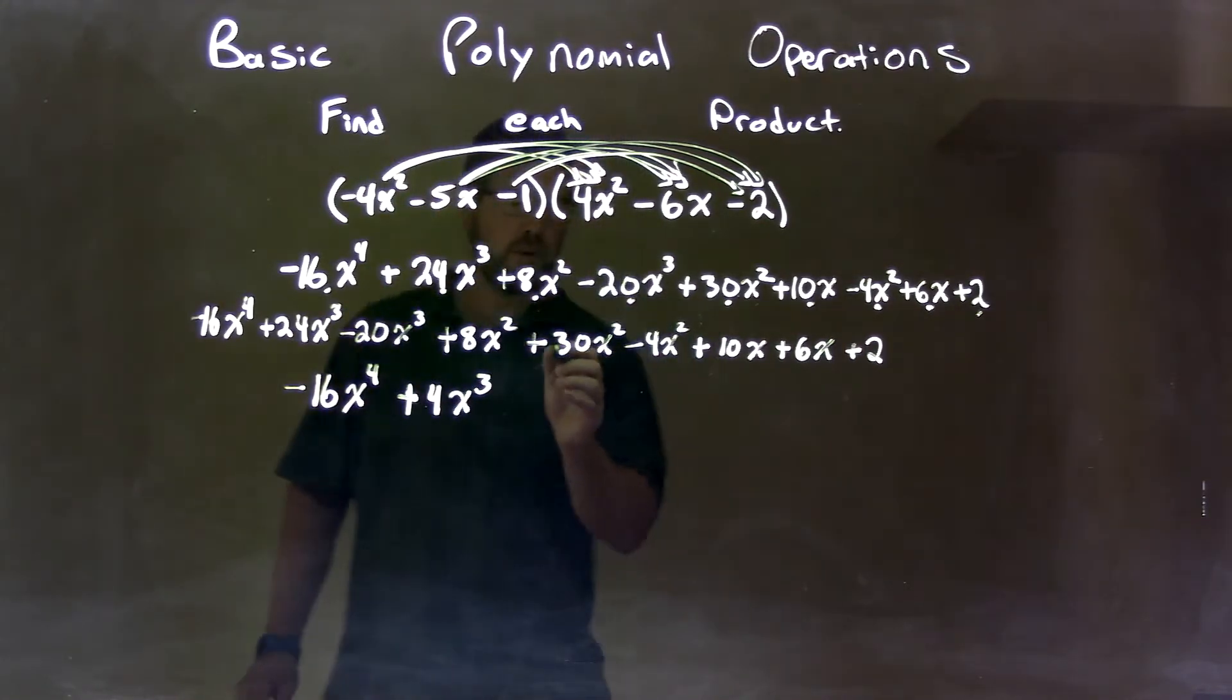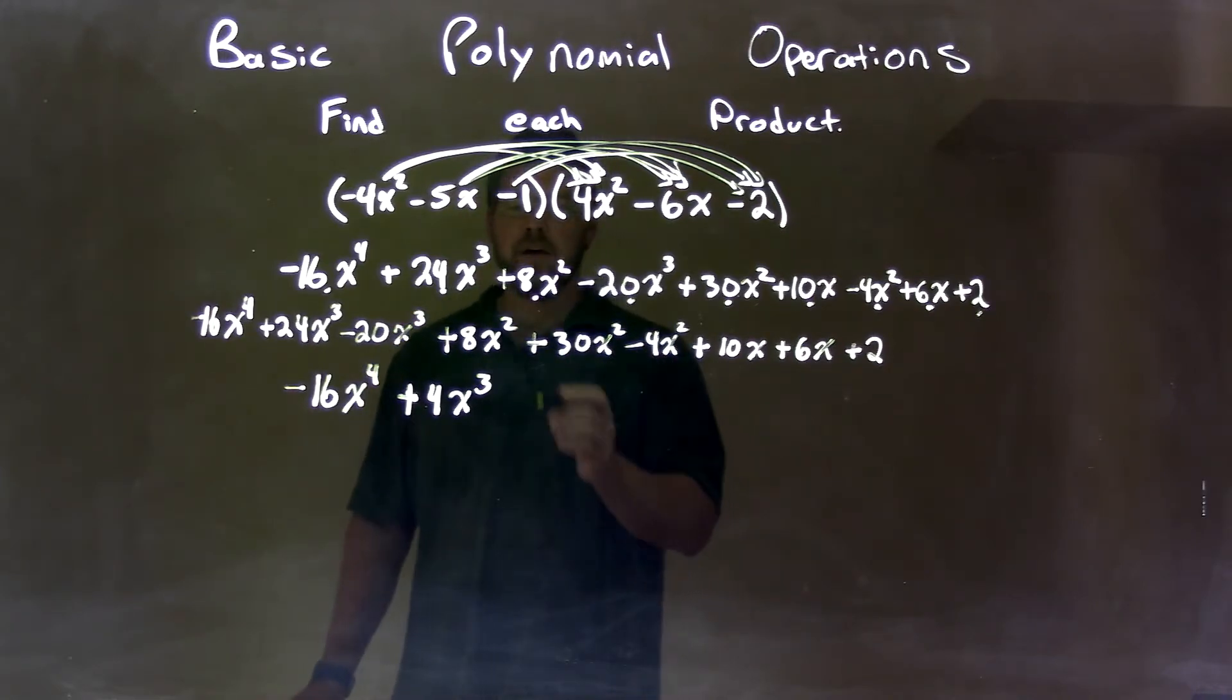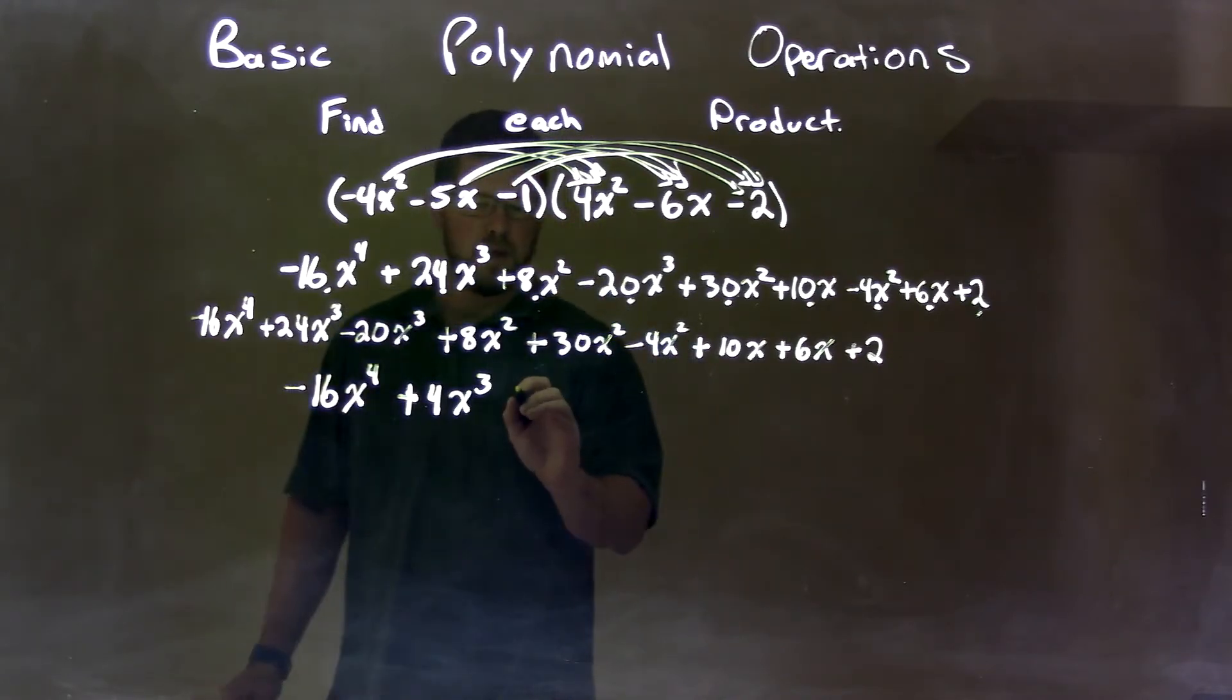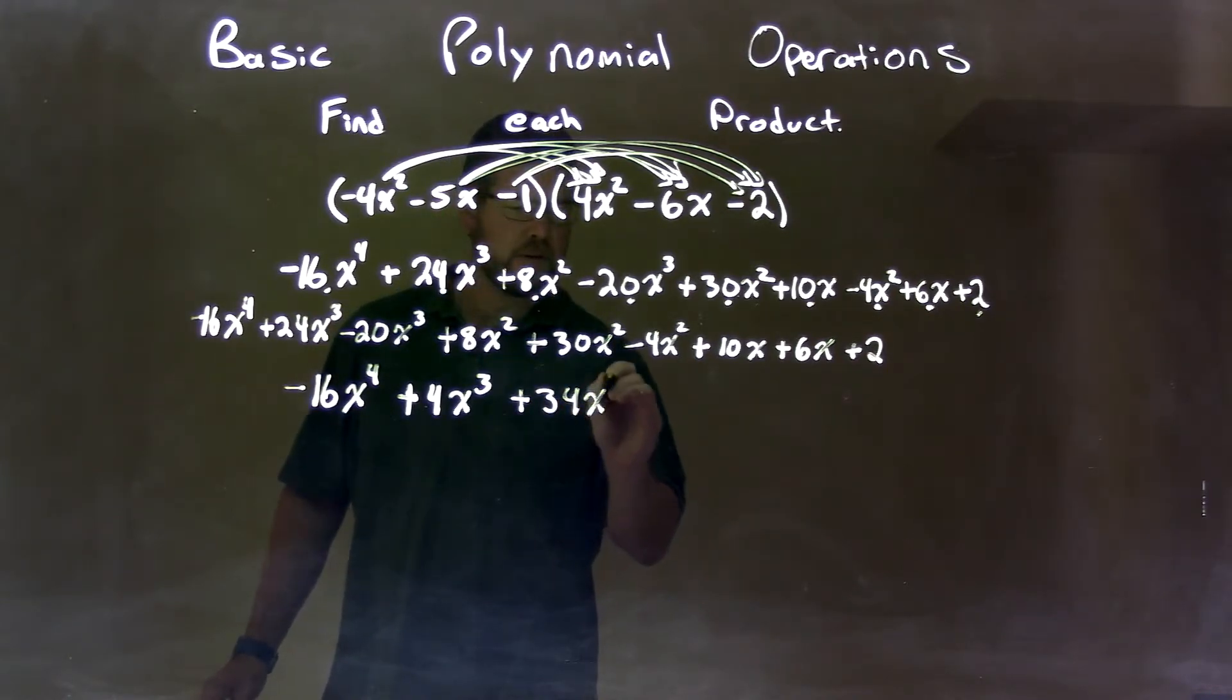Now we're going to bring down the x squared. There's three terms here. So what I like to see here is 8x squared minus 4x squared is just positive 4x squared plus 30x squared is 34. So we have plus 34x squared here.